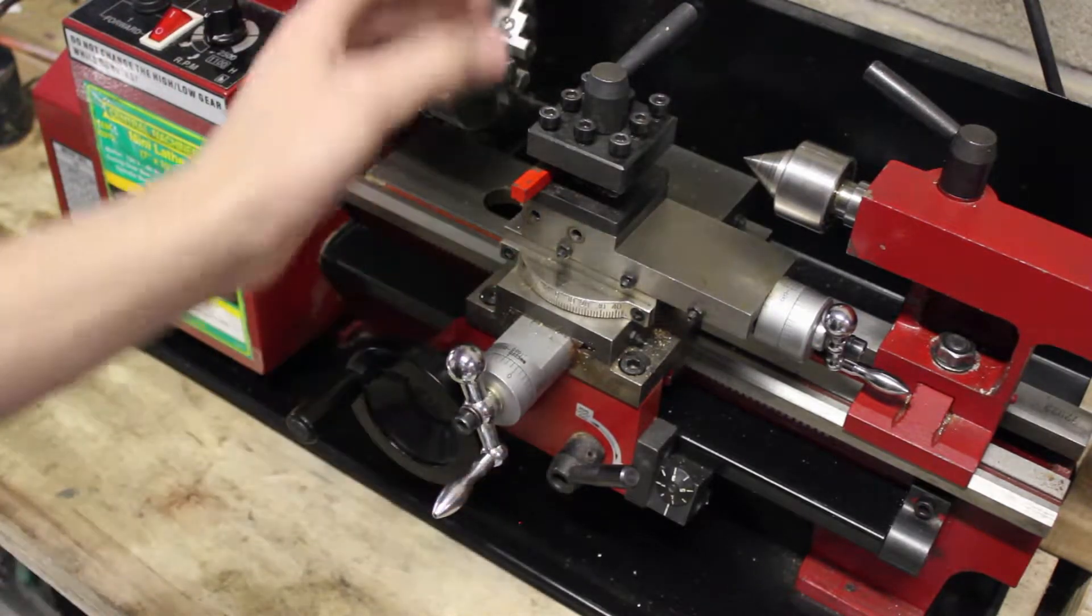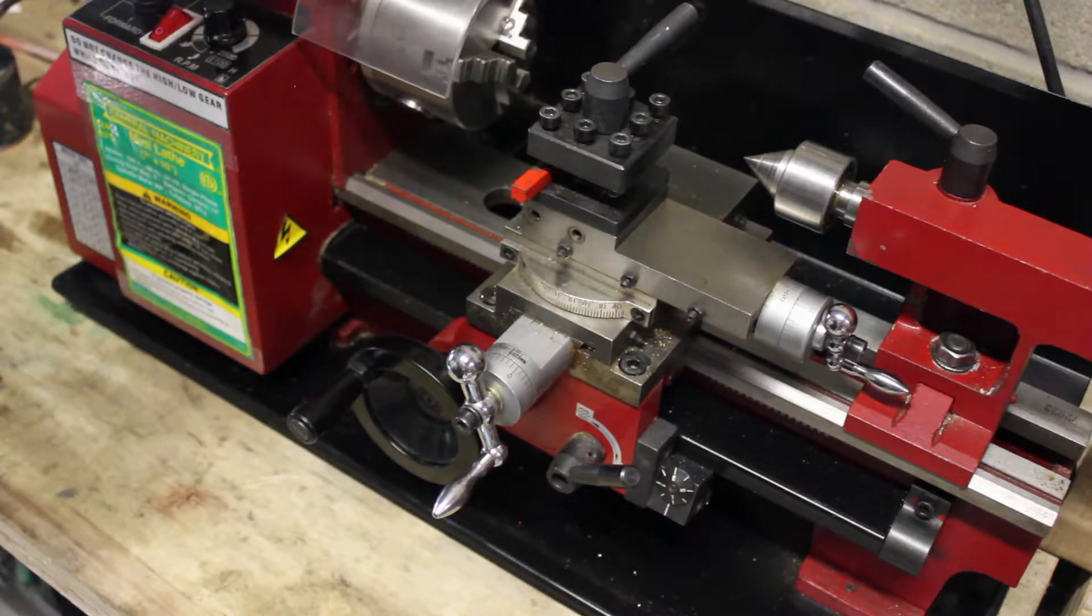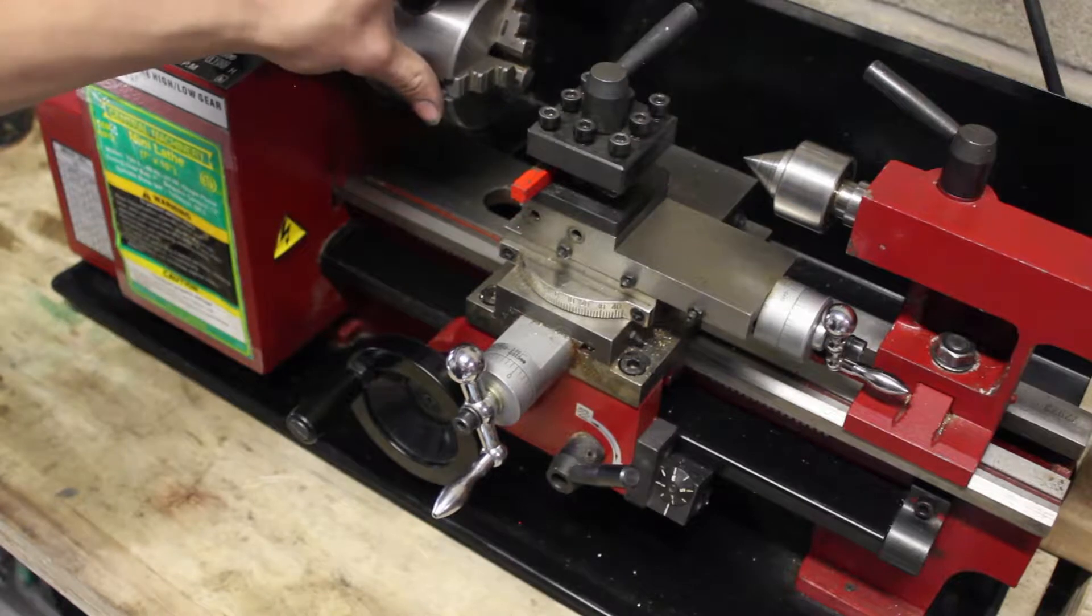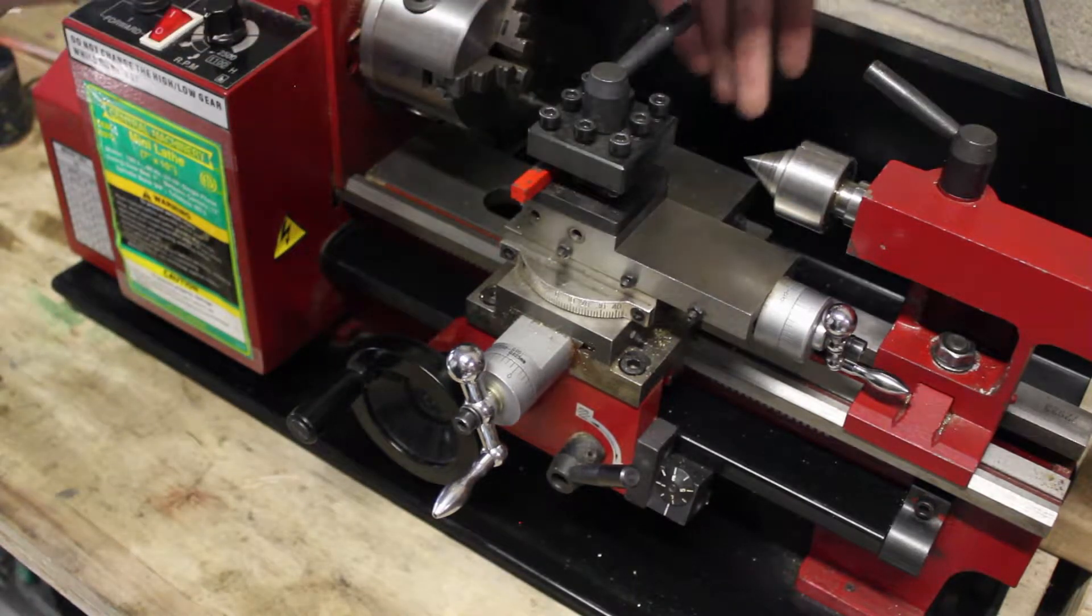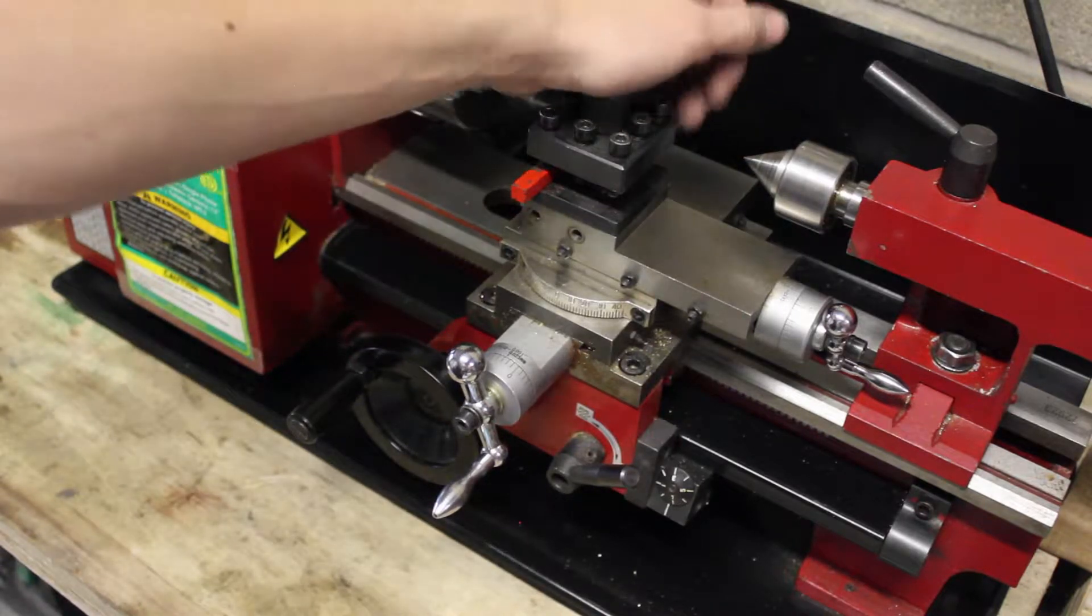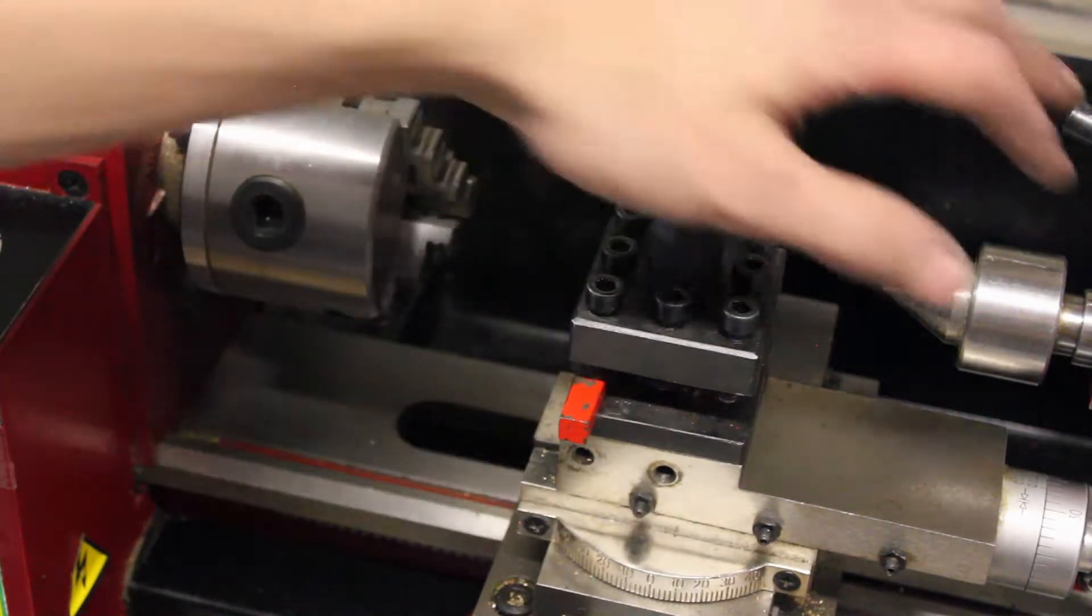So your carriage moves your tool around. Your head activates the spindle, which has a chuck on it right now, to move your part. And the tailstock can support your part from the other end, or it can be used for drilling.